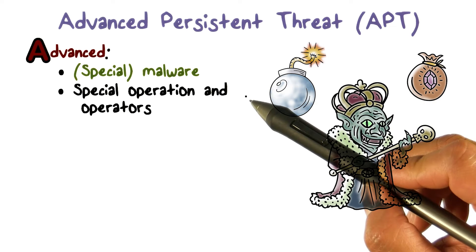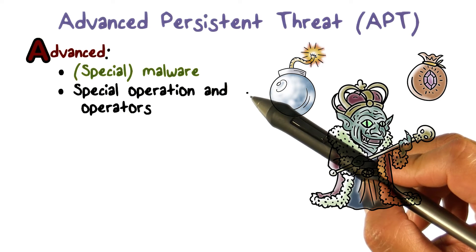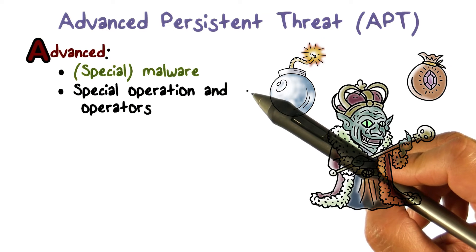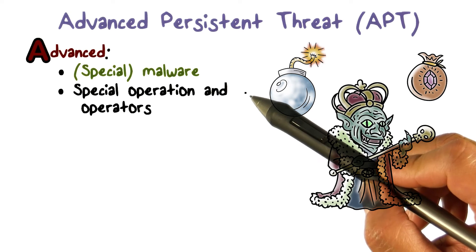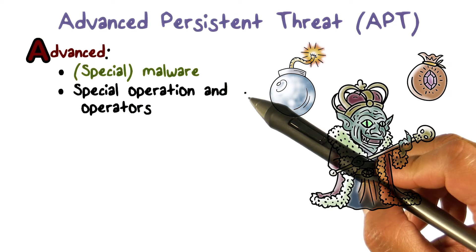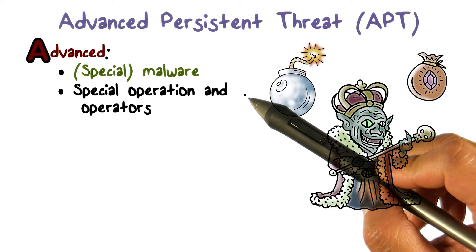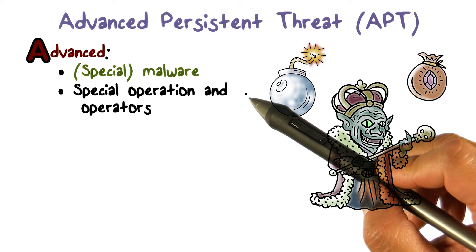Advanced can also mean special operations. That is, APT is not used for common attacks and frauds such as spamming, click fraud, or phishing. Rather, it can be used for very high value operations, such as stealing the design of a new airplane.